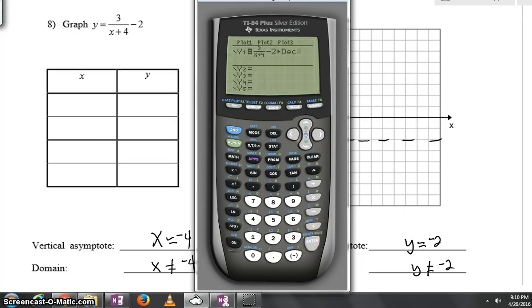I personally recommend then hitting math and coming down to decimal. Then when you look in your table, all of your y values will be expressed as decimals instead of fractions. Speaking of that, to get to the table, we'll hit second, graph. And you can see it was by x equals negative 4 that we were having an issue.